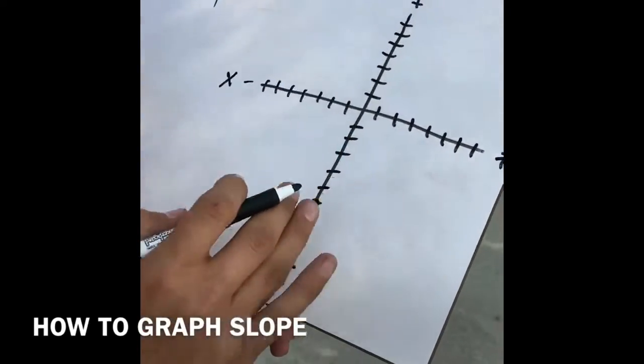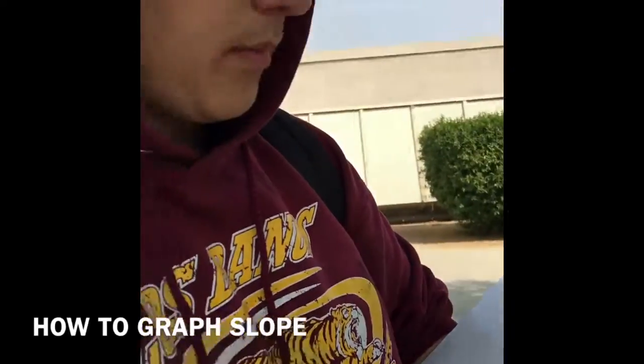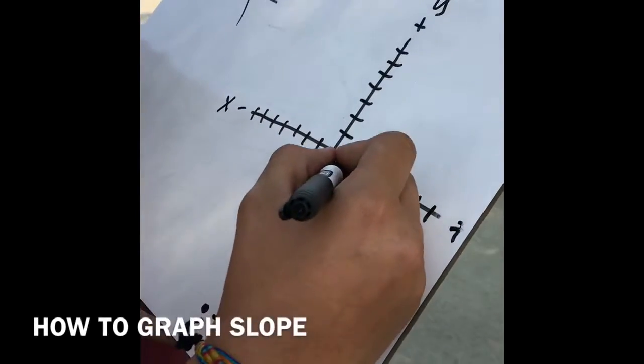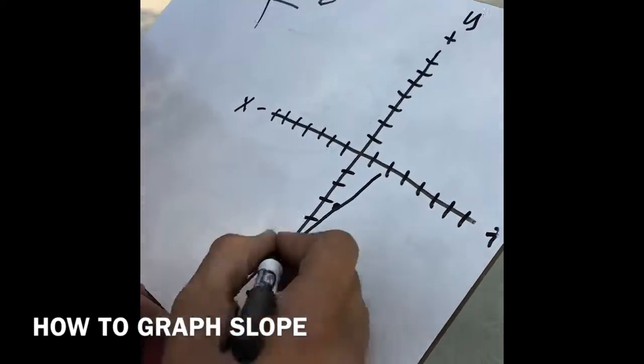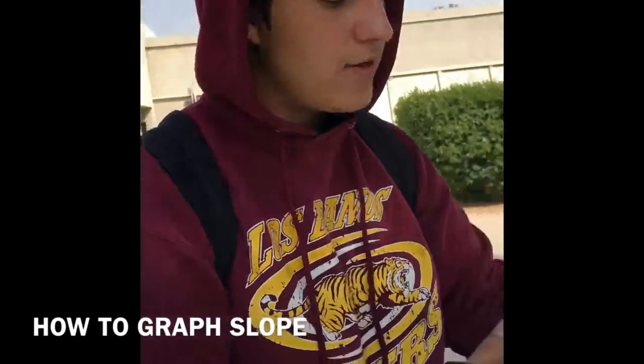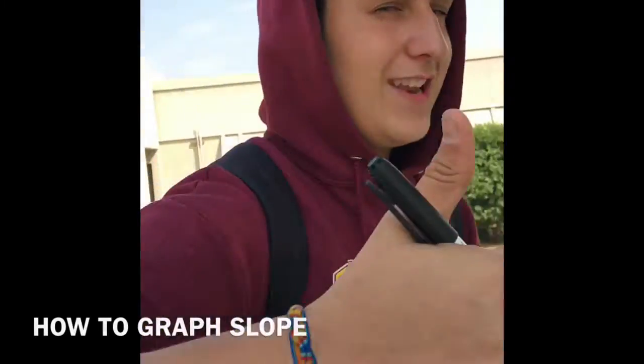And then if you want to make it longer and your graph ends, you can just go do the opposite thing. So we can go up 1, 2, 3, and then over 1. Now we have 3 points. We can graph. We have a line. And that's your answer. So if you ever get asked a question again how to do this, now you know. Have a good day.